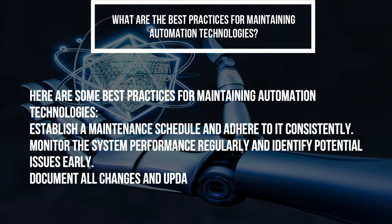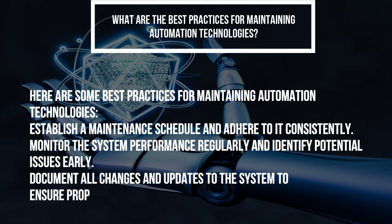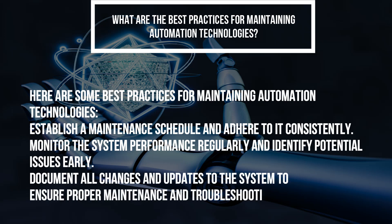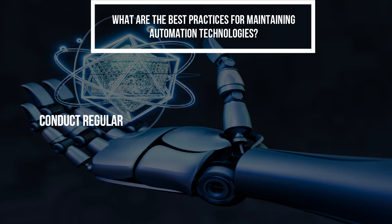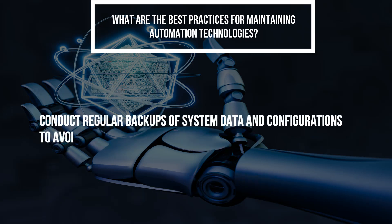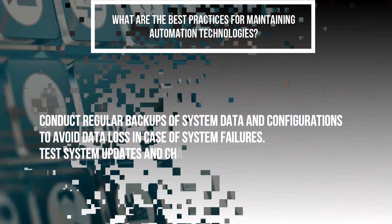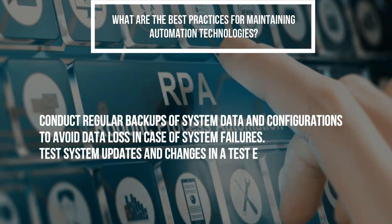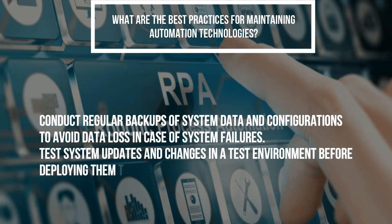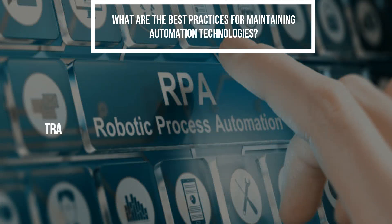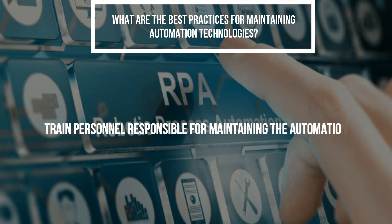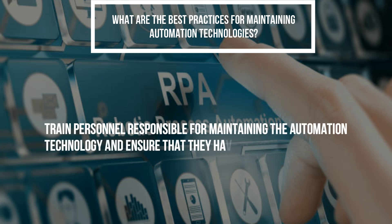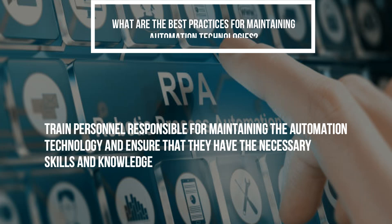Document all changes and updates to the system to ensure proper maintenance and troubleshooting. Conduct regular backups of system data and configurations to avoid data loss in case of system failures. Test system updates and changes in a test environment before deploying them to production. Train personnel responsible for maintaining the automation technology and ensure they have the necessary skills and knowledge.